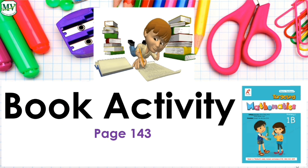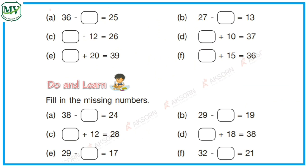Now, kids, get your math book and open it on page 143. Let's find the unknown numbers. Letter A. Subtract 25 from 36. So, 36 minus 25 is equal to? That's right! 11. The missing number is 11.